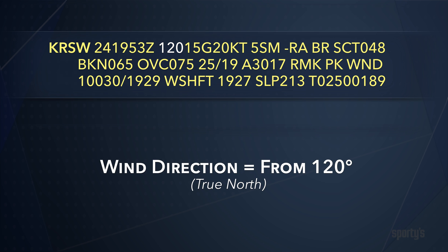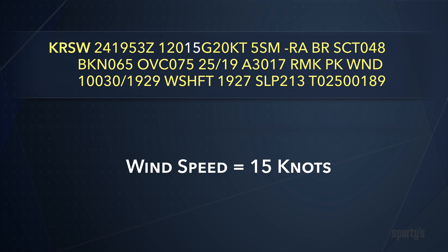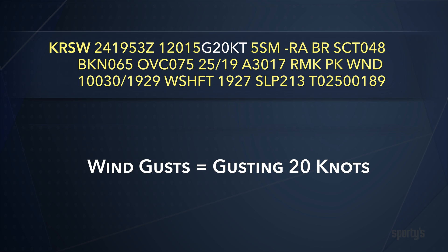The wind information begins with the direction from which the wind is blowing. In this case, the wind is from 120 degrees, referenced to true north. The next numbers are the speed, predominantly 15 knots. The G20 tells us that the maximum observed gusts have been 20 knots.